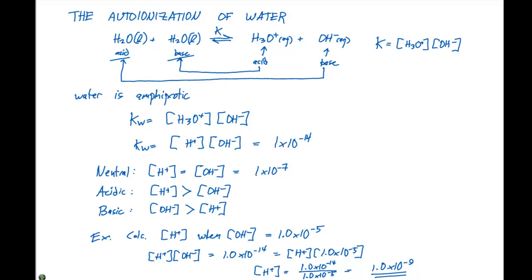In this case, comparing the two: [OH−] is 1.0×10⁻⁵ and [H+] is 1.0×10⁻⁹, so this solution is basic because [OH−] is greater than [H+]. To recap: we talked about the auto-ionization of water and that water is amphiprotic, which allows us to come up with an equilibrium expression relating [H+] to [OH−], and we can solve specific example problems from this.